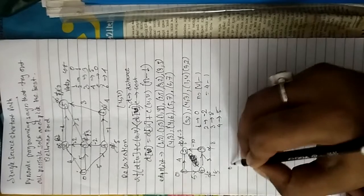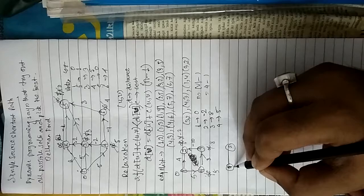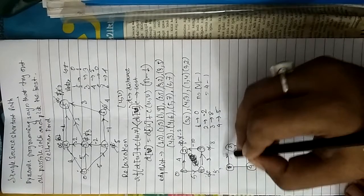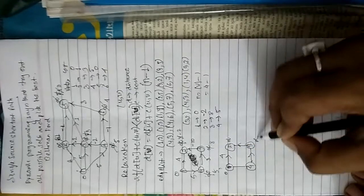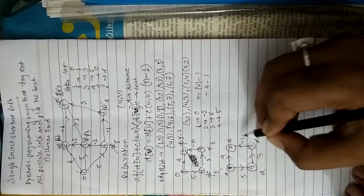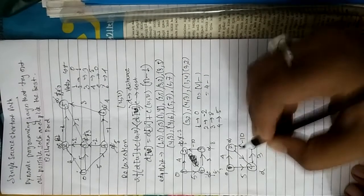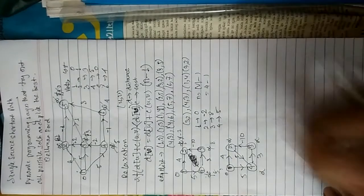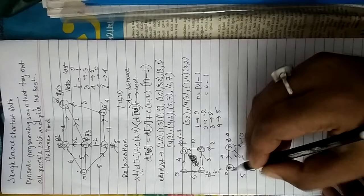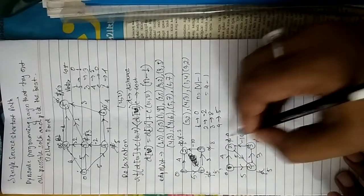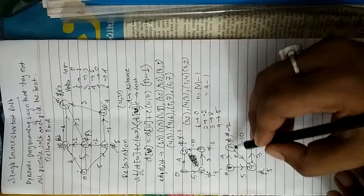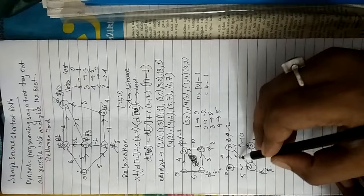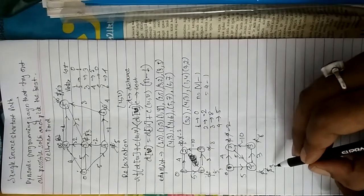Now let's consider the drawback of Bellman-Ford. Same problem but we add one edge with value five connecting back. Distances start: zero, infinity, infinity, infinity. Edge costs: five, three, minus ten. After processing: zero plus four equals four; zero plus five equals five; five gives eight; then minus two. From minus two with cost five: minus two plus five equals three.